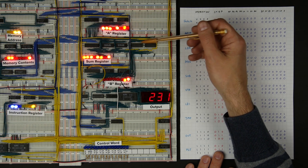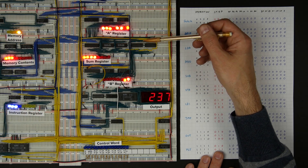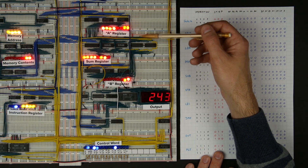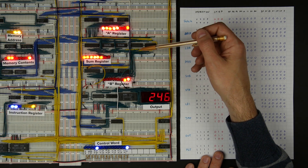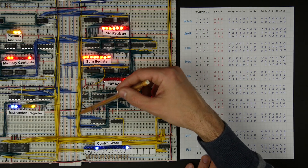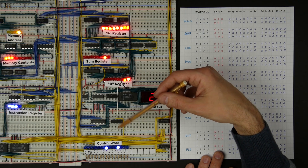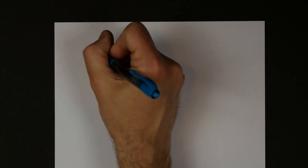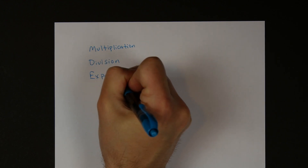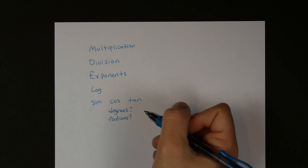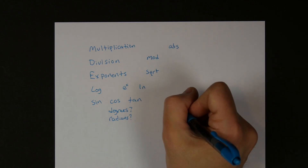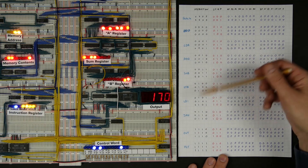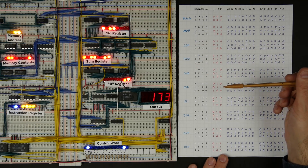We could add a multiply instruction by adding some additional hardware, like we did for subtract and add. We could build hardware to multiply two numbers — it's just combinational logic — and add another bit to our control word for multiplication, then put the appropriate thing in the microcode. But multiplication isn't the only thing that's missing. What about division, exponentiation, logarithms, trigonometric functions? If we just keep adding new instructions for each new function, we're going to be building custom hardware all day. Is that really what we want?